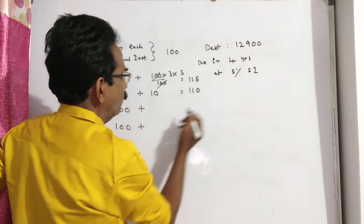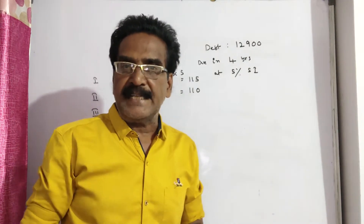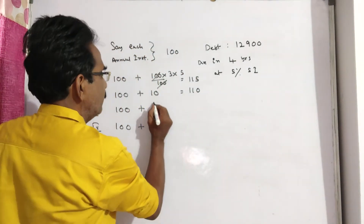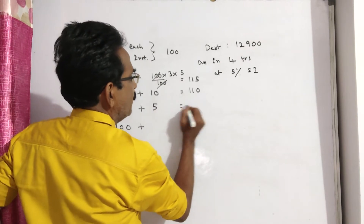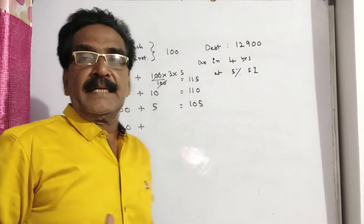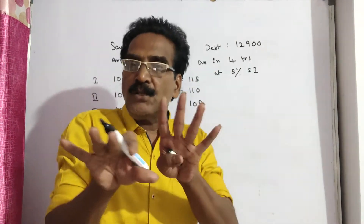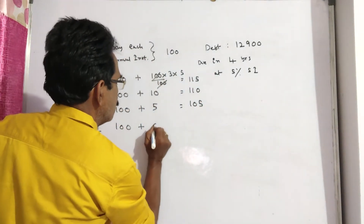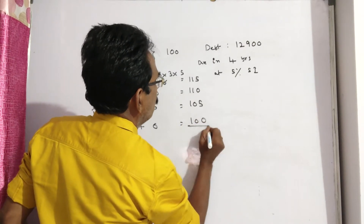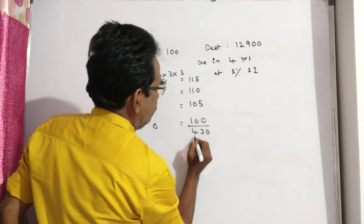That gives a total amount of 110. The installment you pay at the end of the third year and the installment you pay at the end of the fourth year will fetch no interest, so that is 0. Total amount becomes Rs 430.